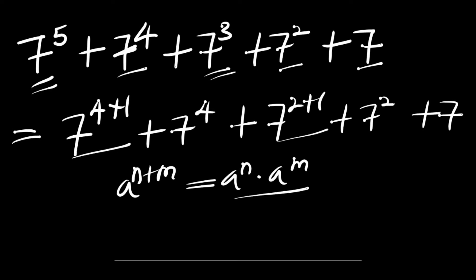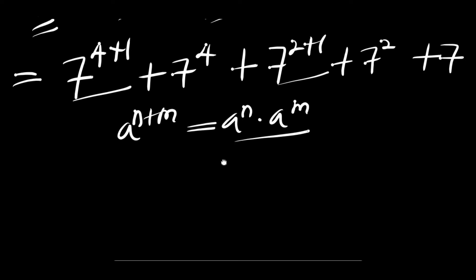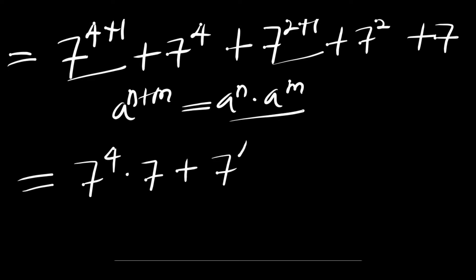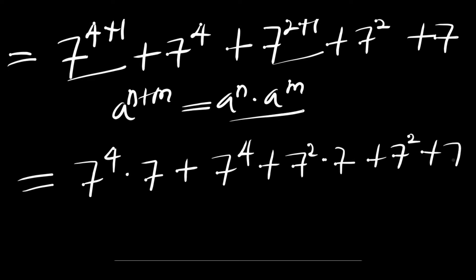So we are going to have 7 power 4 times 7, plus 7 power 4, plus 7 power 2 times 7, plus 7 power 2, plus 7. We have some 7 power 4 terms and some 7 power 2 terms.